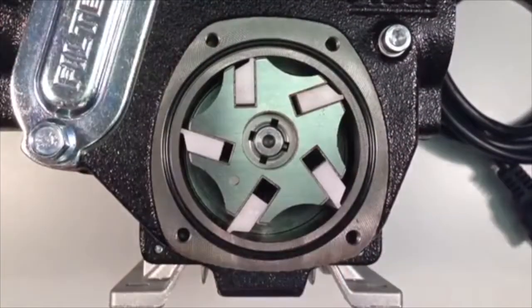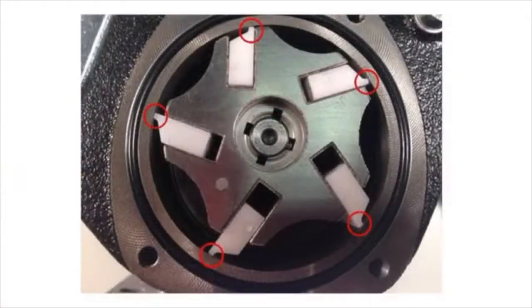When you have installed all five replacement vanes, check against the photograph on screen that the chamfered edges of the vanes are matching up with the diagram. The red circles around the vanes indicate the chamfered edge.